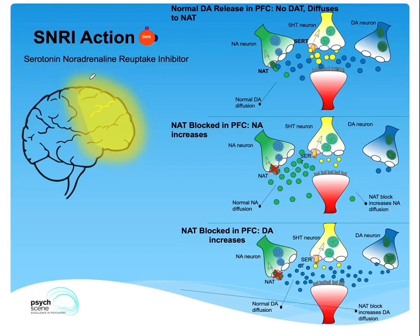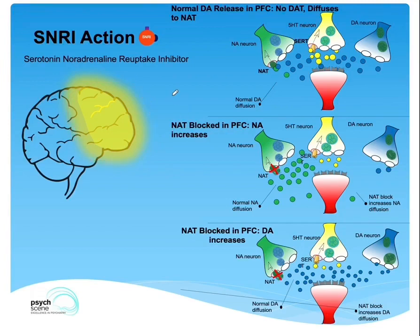Noradrenaline is also known as norepinephrine. In the prefrontal cortex, which is postulated to be involved in the pathogenesis of depression, there are three key neurotransmitters: noradrenaline, serotonin, and dopamine.